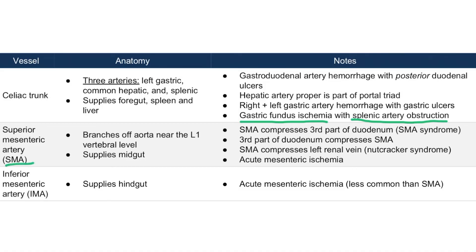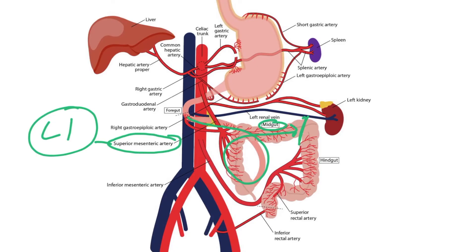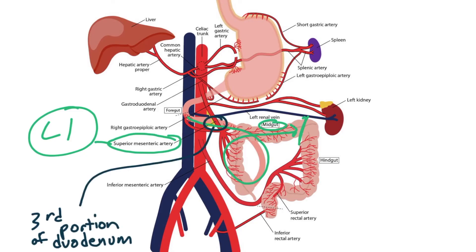Now let's move on to the superior mesenteric artery. The SMA branches off the aorta near the L1 vertebral level and supplies blood to the midgut structures — the small intestine all the way down to the proximal two-thirds of the transverse colon. Notice how the duodenum crosses the aorta behind the SMA. The part of the duodenum that crosses here is the third portion of the duodenum, and normally there is a fat pad surrounding the duodenum, preventing the SMA from squeezing down onto the duodenum.